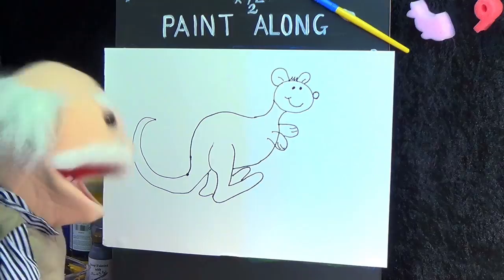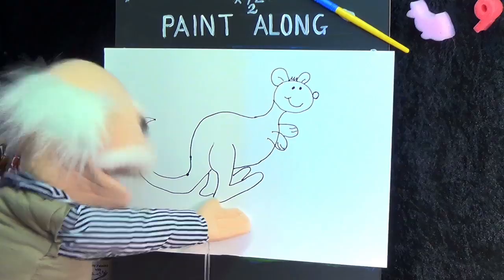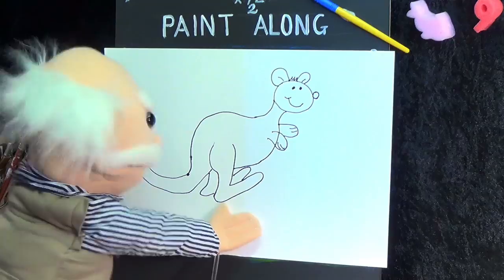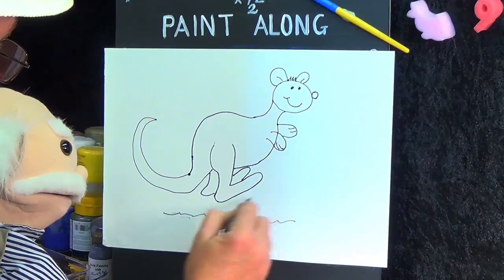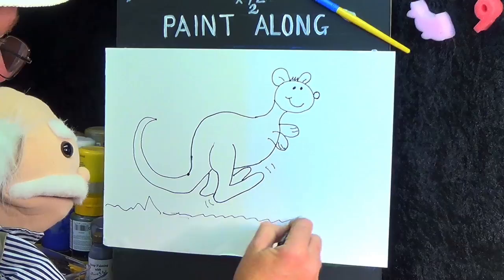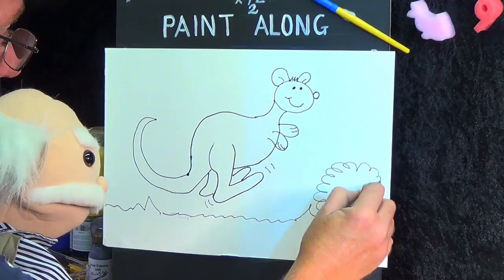Now, we need to put something down there to make it look as if he's hopping. Hopping up off the ground. Hopping up off the ground. So let's put some grass in. And let's put some squiggly marks. Like that. So it looks as if he's hopping around. We'll put a bush there.